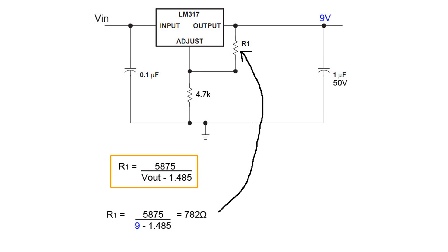For example let's say you wanted a 9 volt output. Plugging that into the equation gives you R1 equals 782 ohms and R2 is still the 4.7 kilo ohms we chose.